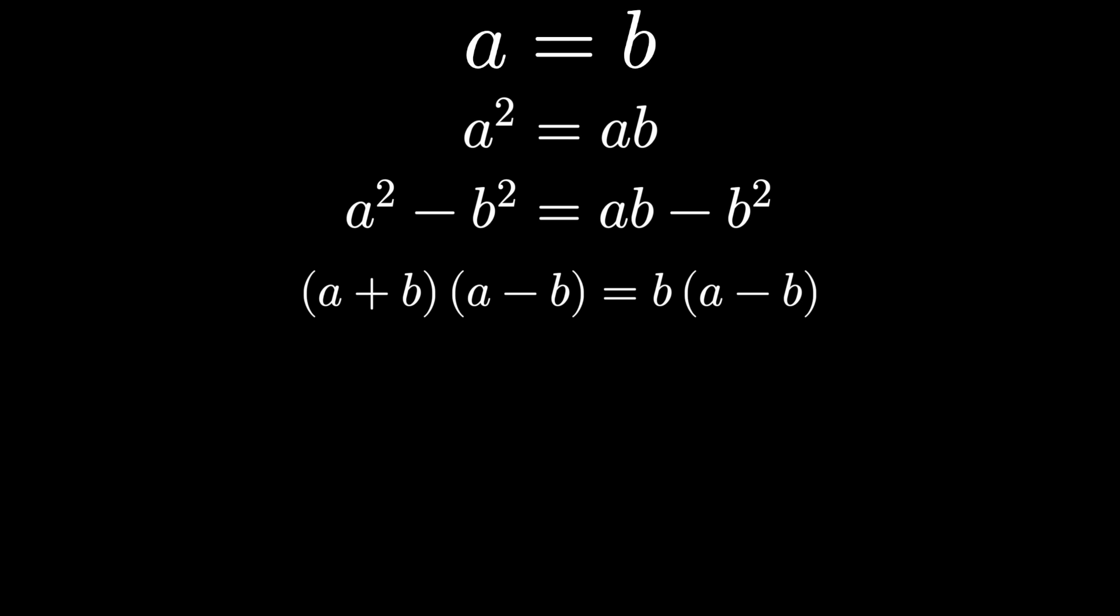Now just using standard algebraic rules, cancel a minus b on both sides. We have a plus b equals b, but we assumed that a was b to begin with, so a plus b means the same as b plus b.